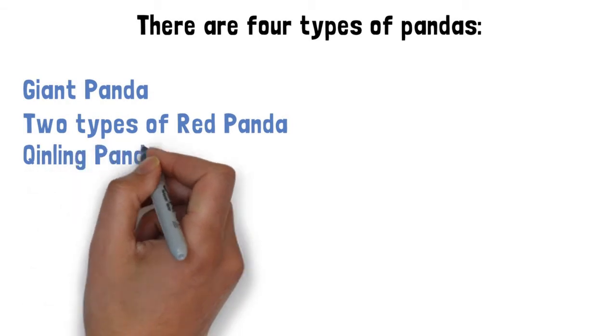There are four types of pandas: giant panda, two types of red panda, and Qinling panda.